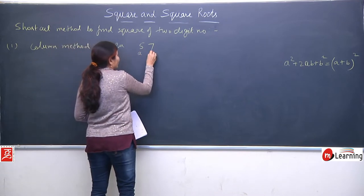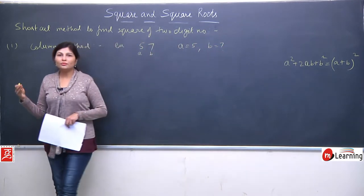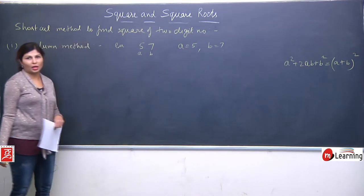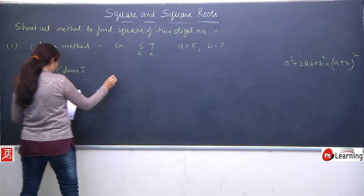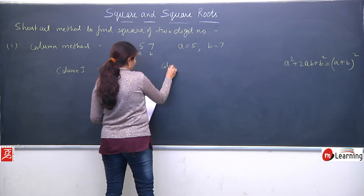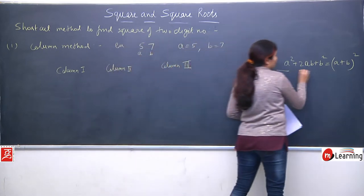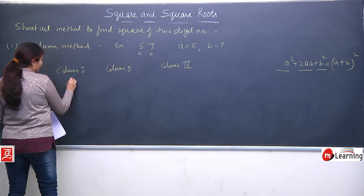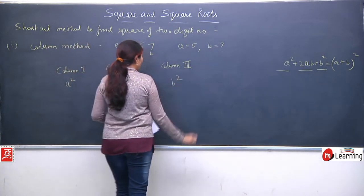We assume a = 5 and b = 7, since our number is 57. In 57, the units-place digit is named b and the tens-place digit is named a. Since our identity has 3 parts, we make 3 columns: column 1 is a², column 2 is 2ab, and column 3 is b².